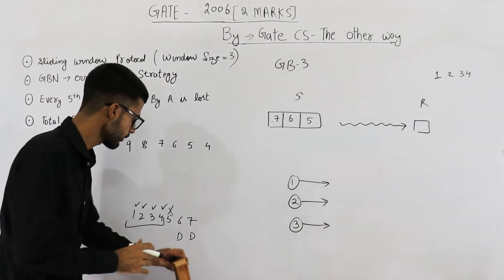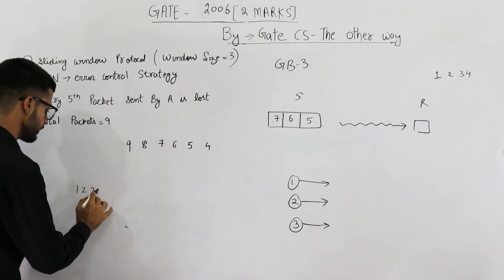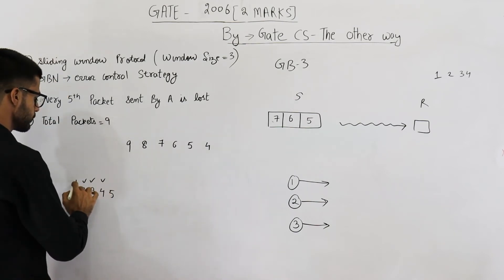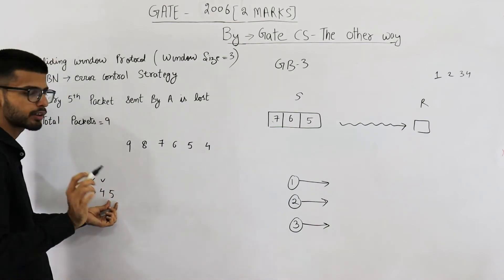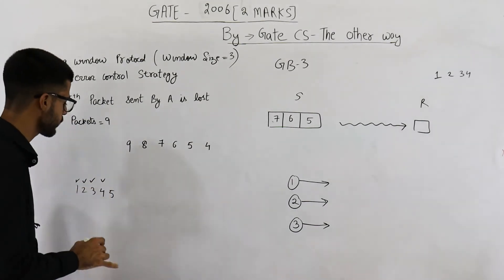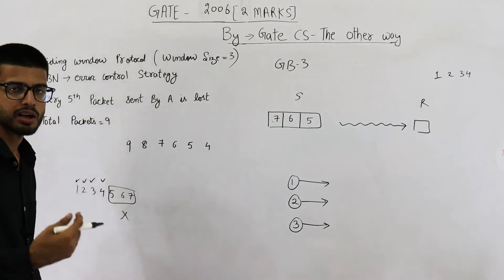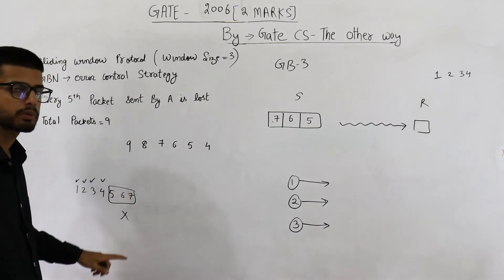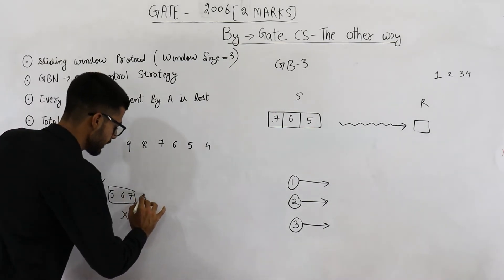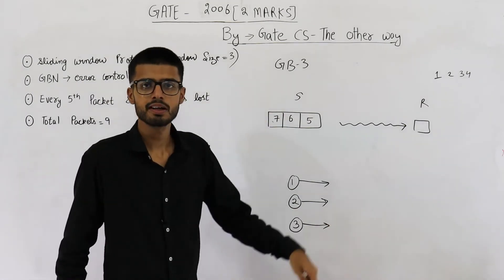What happens is: packets 1, 2, 3, 4, 5 were sent; 1 through 4 were acknowledged but 5 was not, meaning packet 5 was lost. When packet 5 was lost, the contents of the window were 5, 6, 7 — everything will be lost. Packets 6 and 7 get discarded and packet 5 is lost, so the entire window is retransmitted: 5, 6, 7. So currently we have sent packets 1, 2, 3, 4, 5, 6, 7, and now retransmitting 5, 6, 7 — that is 10 packets sent in total.